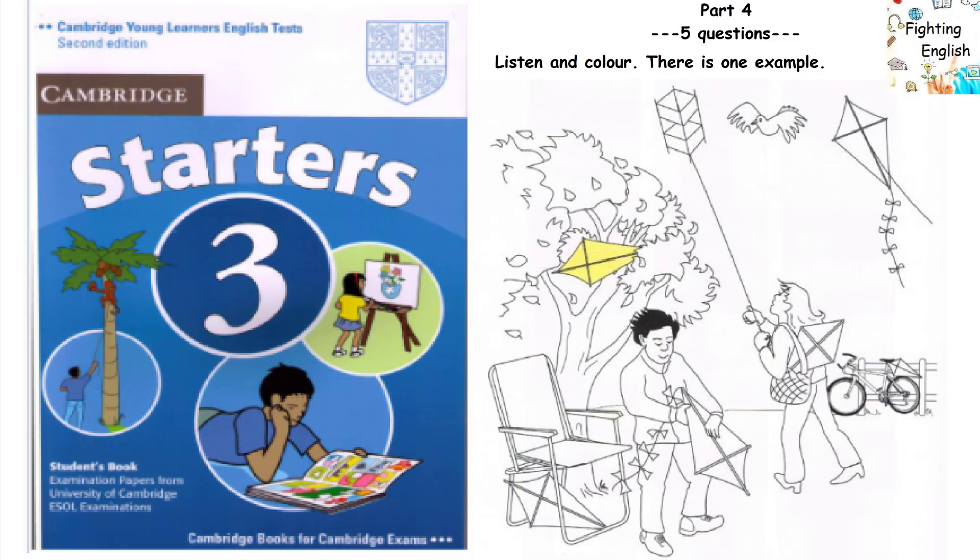3. There's a kite in the girl's bag. In her bag? Yes, I can see it. Can you colour it green, please? Green? Yes, please. The kite in the girl's bag.